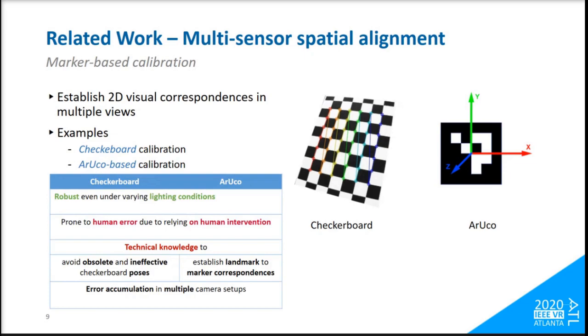Despite the fact these methods are robust under varying lighting conditions, they require heavy human involvement, necessitating multiple moving object captures like checkerboard. This means that users need to know how to avoid ineffective or problematic poses.